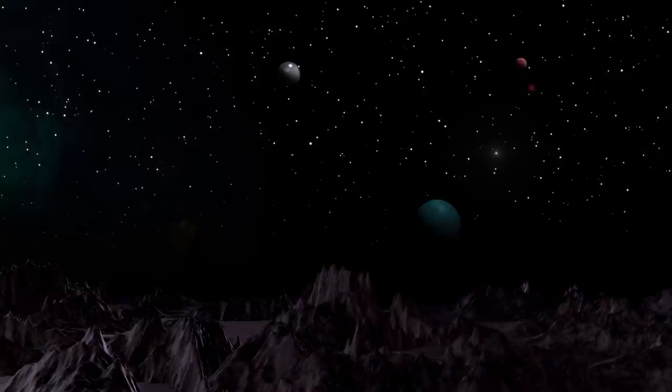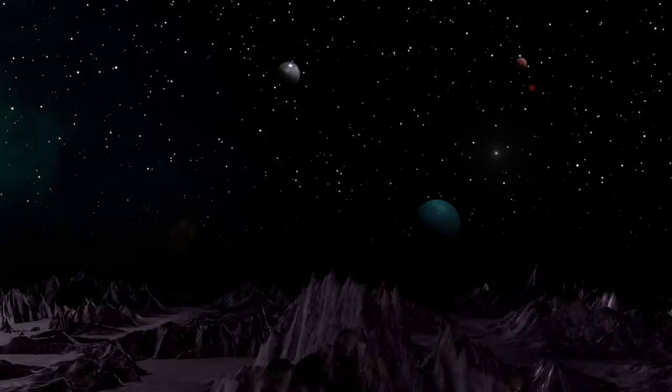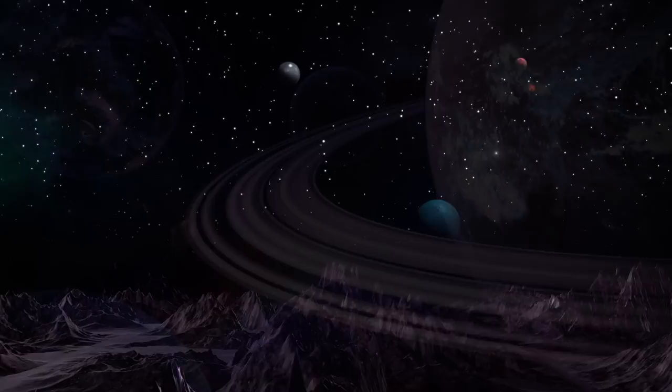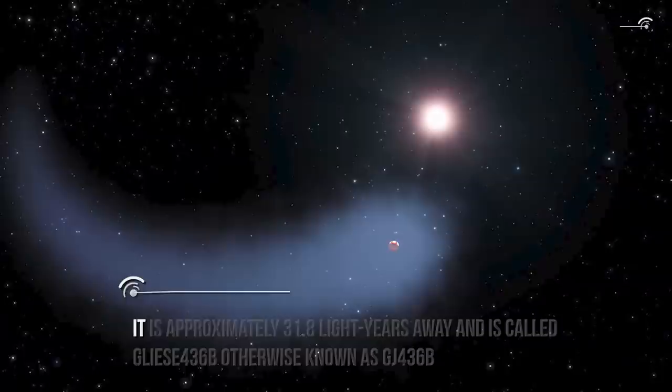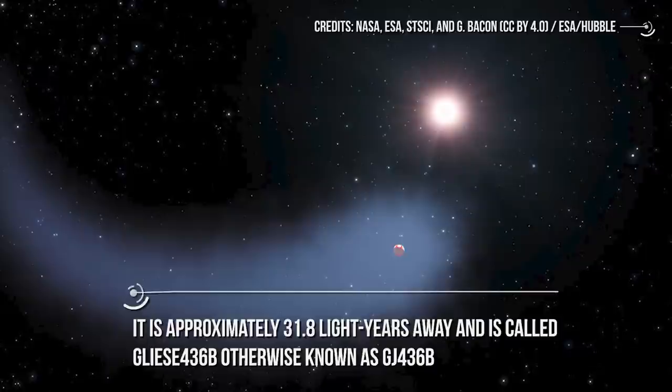Space is full of wonders whose discoveries have always left us wondering. It never fails to bring out the exceptionally weird yet amazing discovery to our knowledge. In all these explorations and discoveries, the vivid interest of astronomers led to the discovery of a weird yet astonishing exoplanet, which is approximately 31.8 light-years away and is called Gliese 436b, otherwise known as GJ 436b.